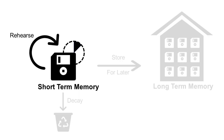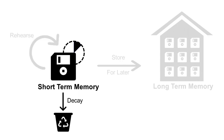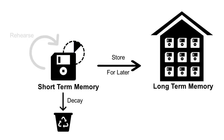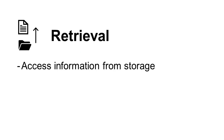Depending on how well you encoded the information, it can decay or be stored in your long-term memory. It's great to know that Bandura had contributions to observational learning, but can you prove it on a test? The third memory process is retrieval — from the depths of your long-term memory, you pull up information so that you can use it.